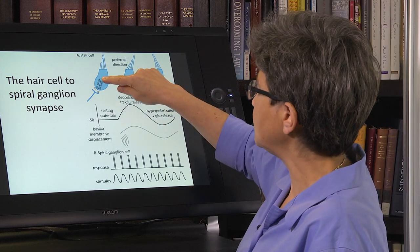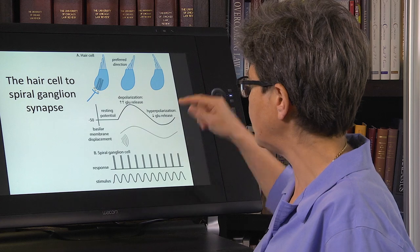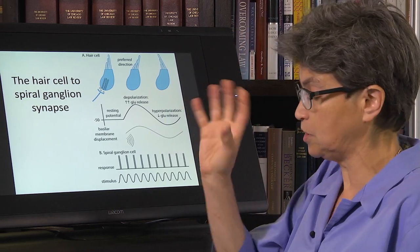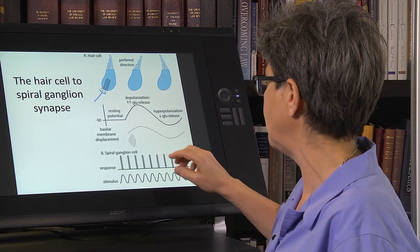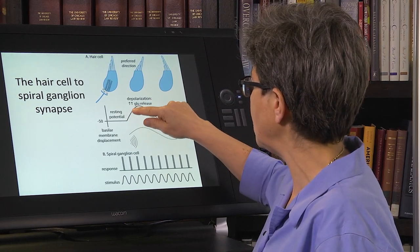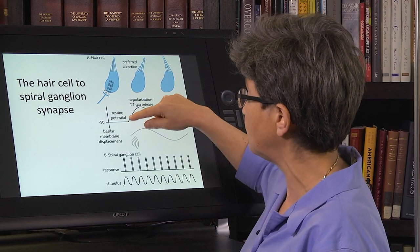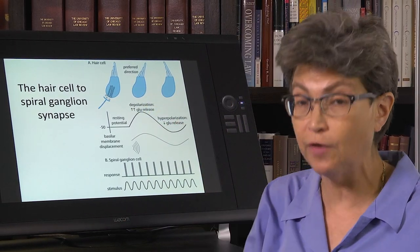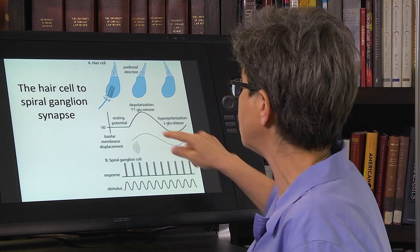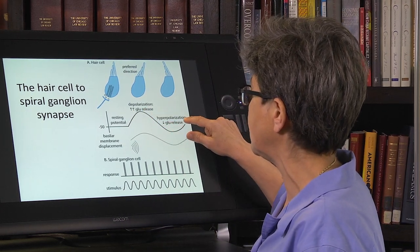The hair cell is responding, as you know, to sound waves, to the displacement of the hair bundle, and it's either increasing its level of neurotransmitter release. The neurotransmitter of the hair cell is glutamate, so it's either increasing the amount of glutamate released, or it's decreasing it.